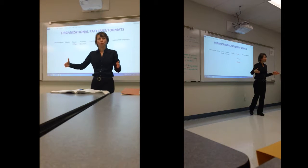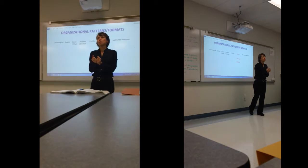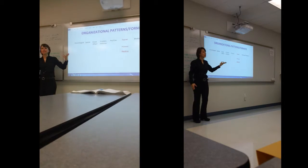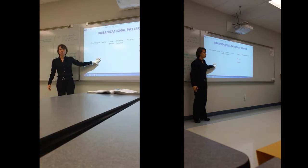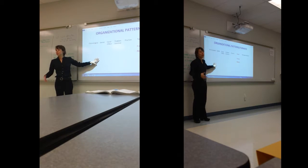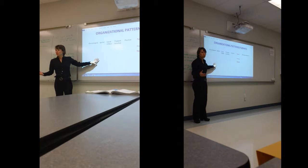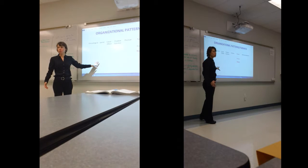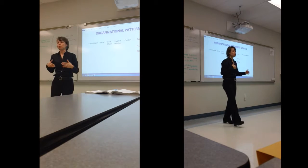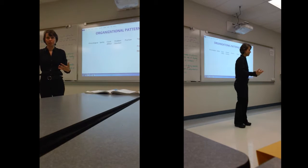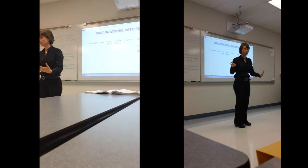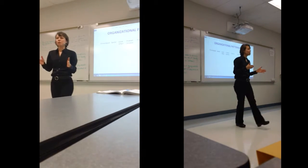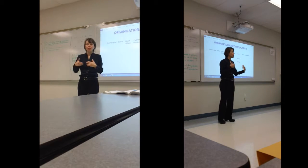Right now we'll focus on the informative types of organizational patterns. First — and I think this one is listed second in your book — it's chronological, and it's the easiest to explain, which is why I'm starting here. Chronological is also called time sequence. You are describing something as it occurs in time, like a process — the first thing, the second thing, the third thing. You can only describe something going forward in time or backward in time.